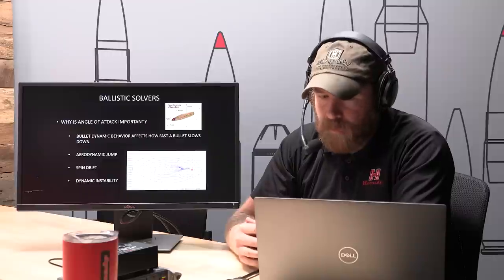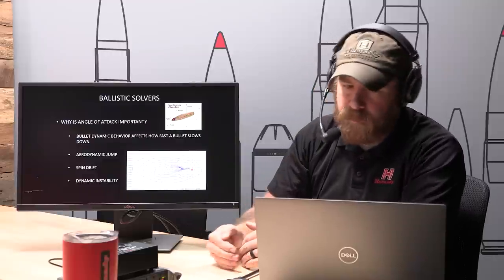There is also dynamic instability. Why does a bullet dramatically pick up angle of attack at certain points in its flight? In some circumstances your points of impact can become really erratic. That is also tied to angle of attack — you have to be able to figure out what each of those things do. You have to have angle of attack. So it's very important.